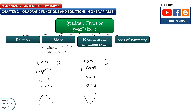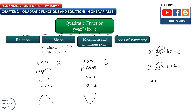Let me give you an example: y equals 2x squared minus 3x plus 4. Let's compare this to the general equation ax squared plus bx plus c. The coefficient in front of x squared is a. So for this example, a is 2, which is a positive number — positive means smile — so the shape of the graph opens upward like this. By looking at a, you know the shape of the quadratic function.